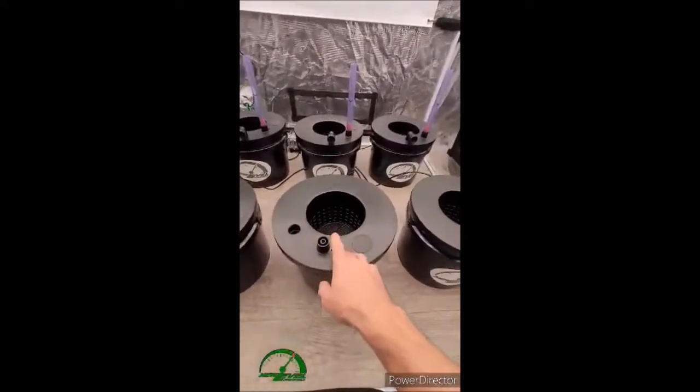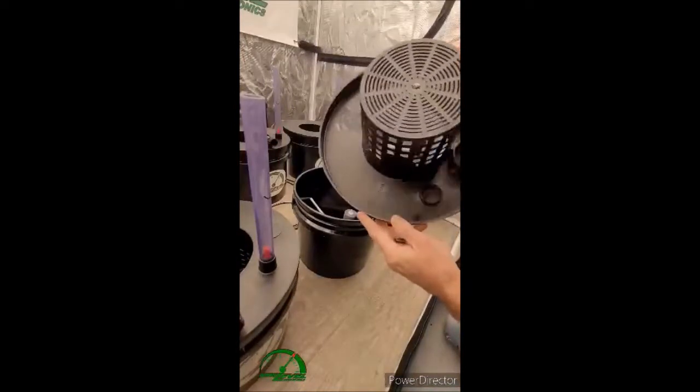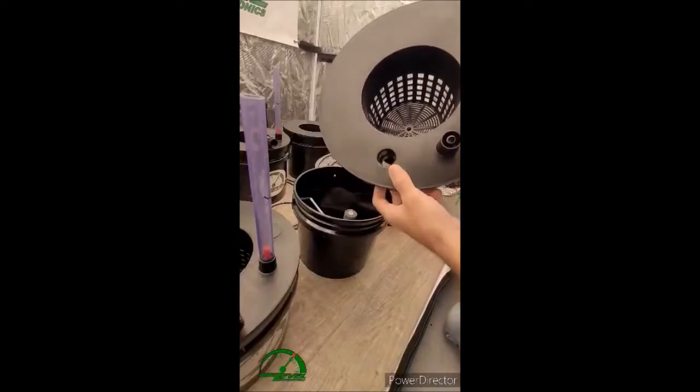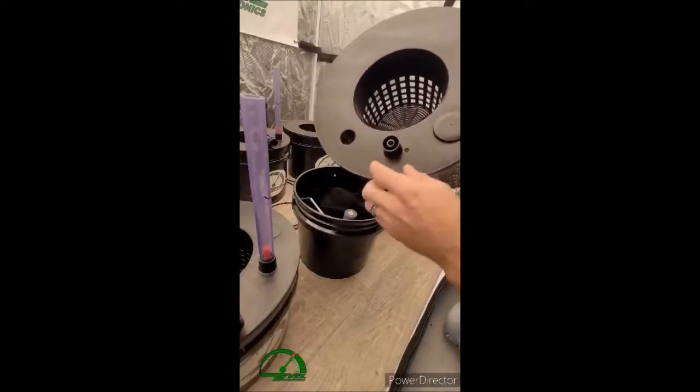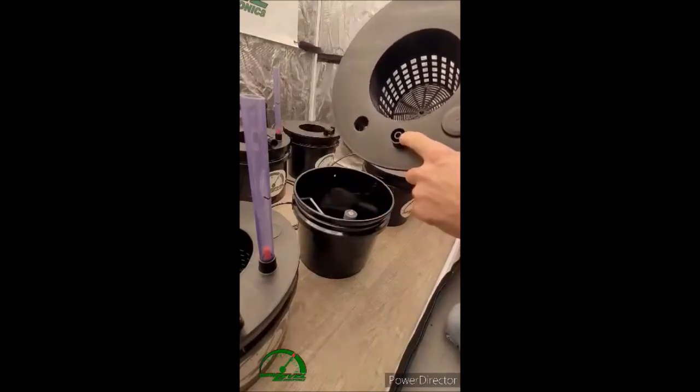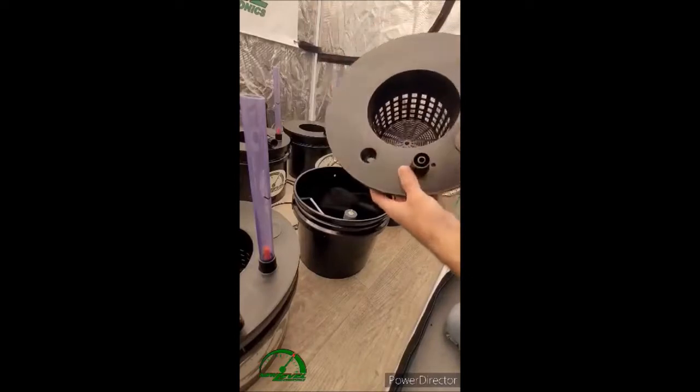Here we have the New Level Hydroponics lid. It's an awesome lid. The support here is for your drain and fill fitting. Here's where your water indicator needle goes through this hole, and the whole meter piece goes on right here inside the bucket.